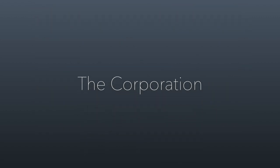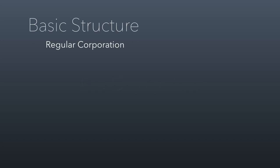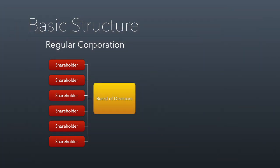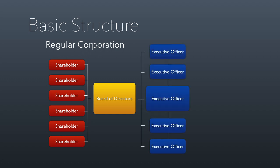Let's start off by talking about corporations and how they work. Regular corporations work this way: a bunch of shareholders come together, pool their assets, and decide to start a corporation. In the process, they appoint a board of directors. This board of directors has the job of representing the shareholders in the management of the corporation — they oversee the strategy and the executive officers, people who are hired to carry out the vision of the board of directors.